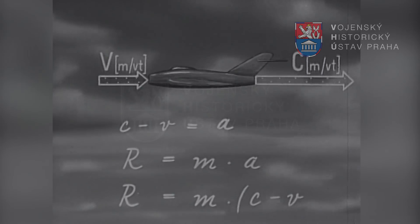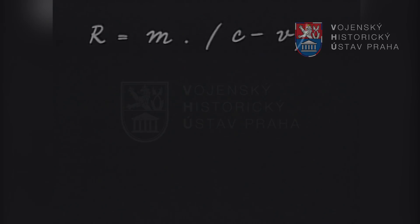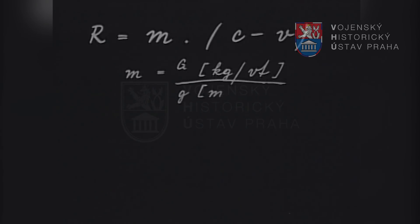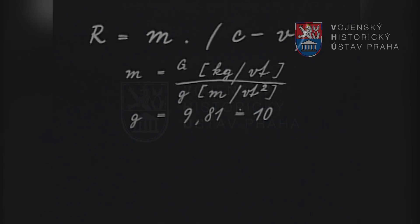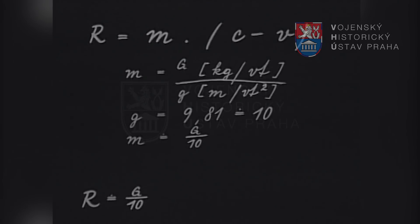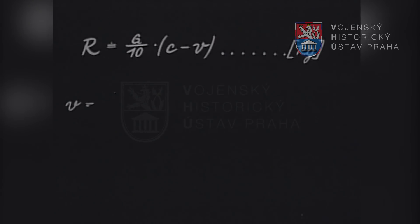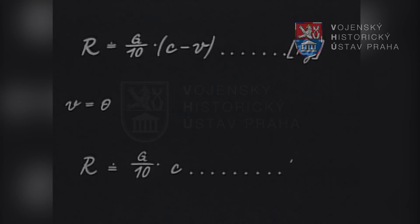Síla R, která vzniká za urychlením hmoty vzduchu M rozdílem rychlostí C minus V, nazývá se tahem motoru. Hmotu vzduchu M vyjadřuje podíl váhy vzduchu G proteklého motorem za jednu vteřinu a zemského zrychlení g = 9,81 m/s², zaokrouhleně deseti. Tah motoru tedy přibližně vypočteme, když desetinu váhy vzduchu, který za vteřinu projde motorem, násobíme rozdílem výstupní a vstupní rychlosti. Pracuje-li motor na místě, je V prakticky rovno nule, a tah R se rovná přibližně desetině váhy vzduchu násobené výstupní rychlostí C.